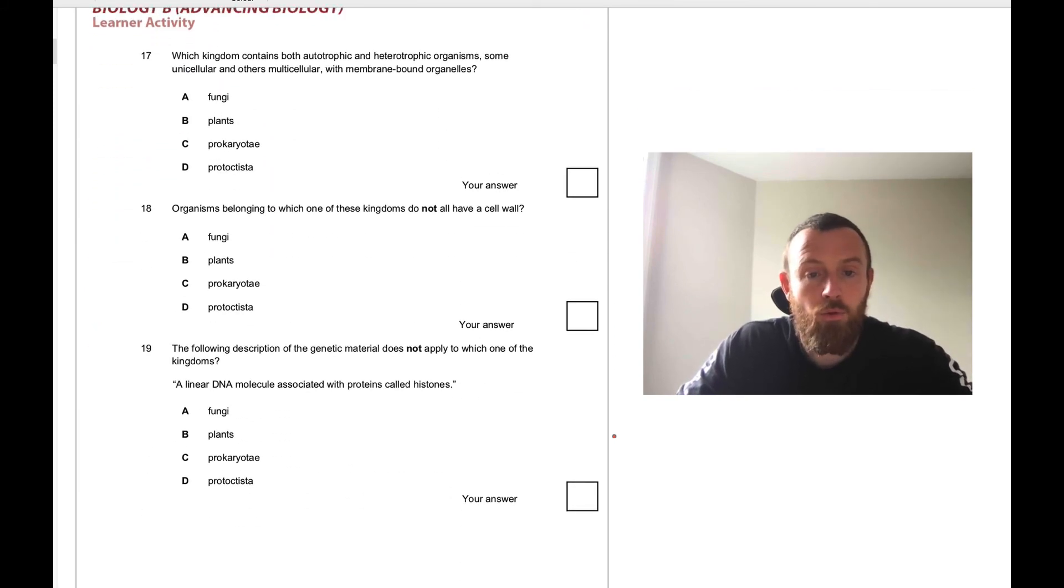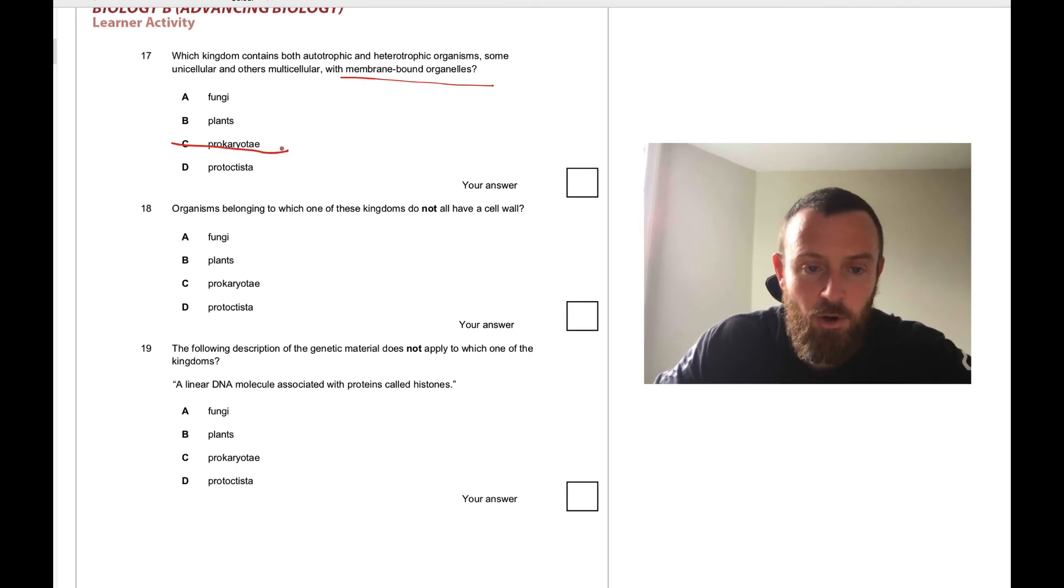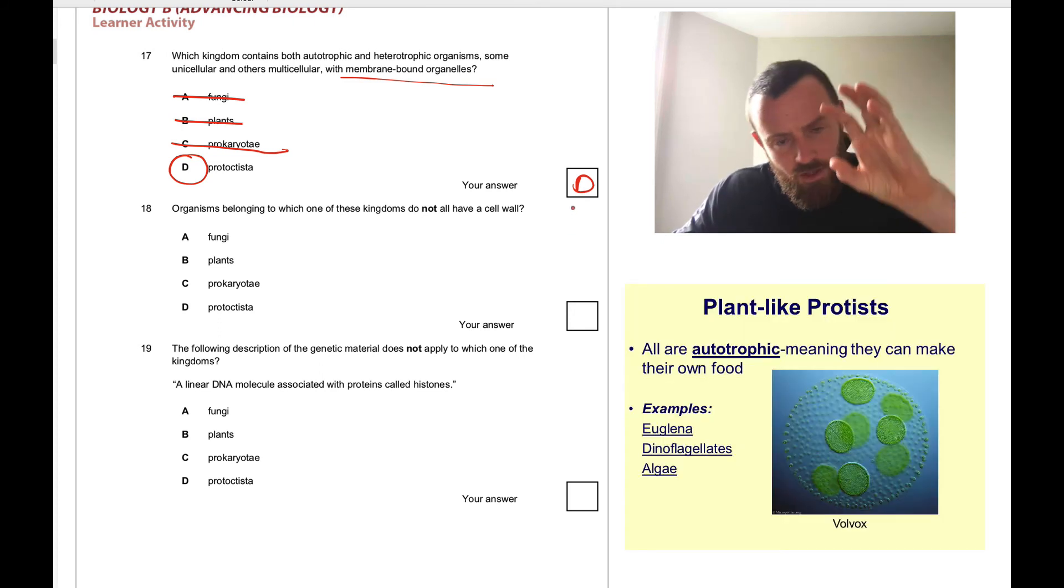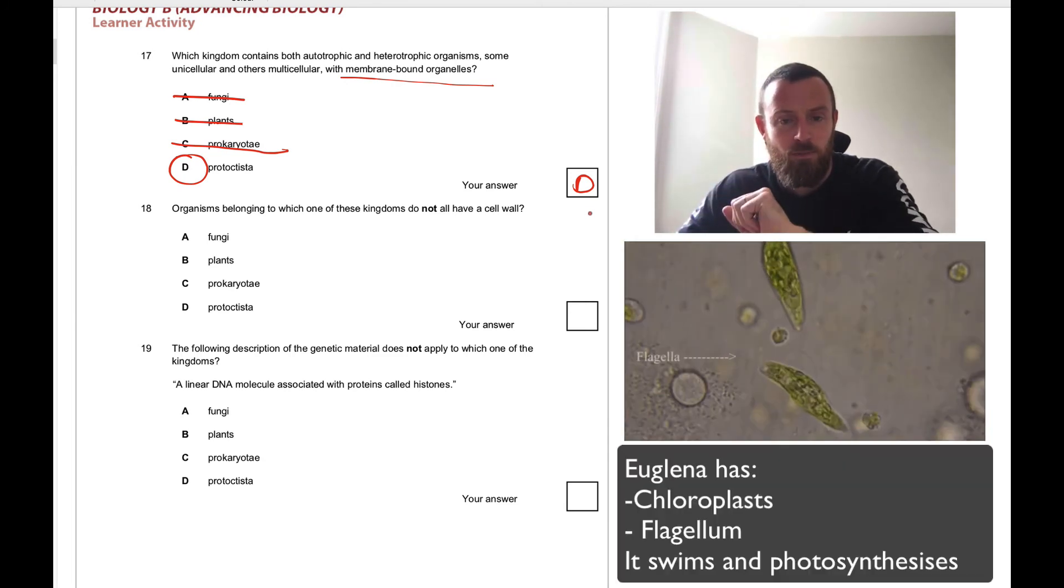Which kingdom contains both autotrophic and heterotrophic organisms? Some unicellular and others multicellular with membrane-bound organelles. This is a tricky one. Let's look at the membrane-bound organelles first. We can cross out prokaryotes because they have no membrane-bound organelles. Pretty much all plants are autotrophic, so not that one. All fungi are heterotrophic, so not that one. It's Protoctista. They're weird, super weird things. I'm going to pop in a little snapshot here of a Protoctista that is autotrophic. Some Protoctista can be heterotrophic, some can be autotrophic.